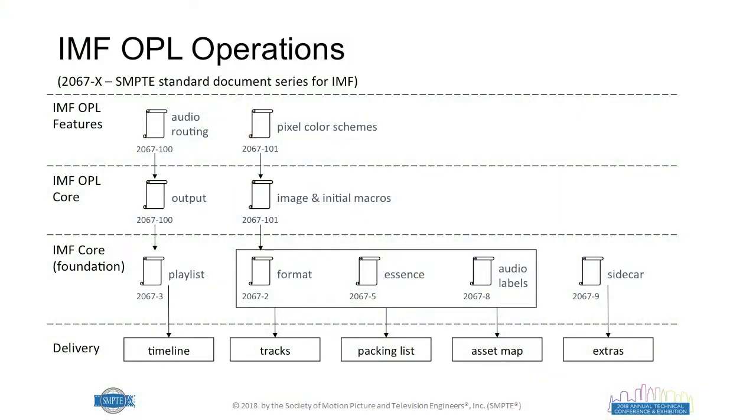Now we'll jump into OPL operations. Following the same concept of building up from components to applications, the OPL system also builds on core components from the foundation. There are four key documents in OPL that have been around for a while to very clearly and specifically specify the output generation process, as well as definitions for image processing, basic macros, audio routing, and pixel color representation.